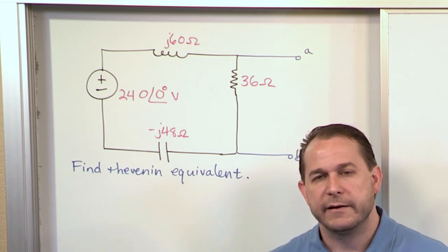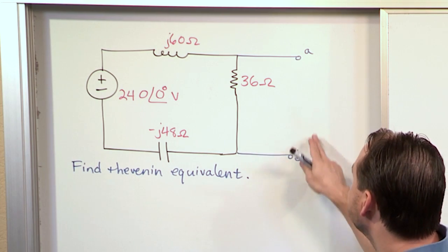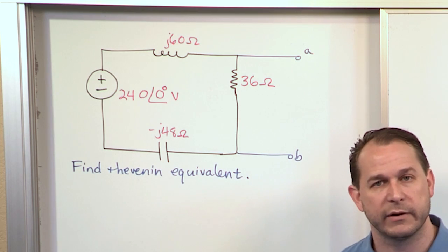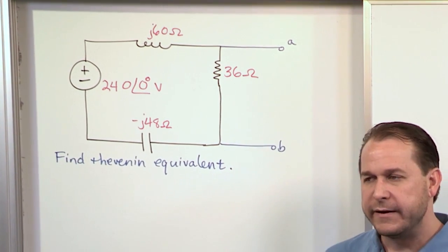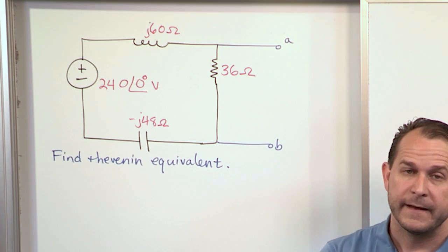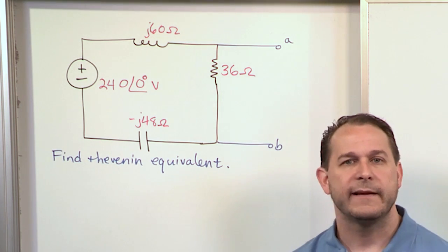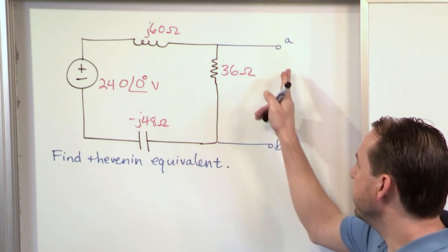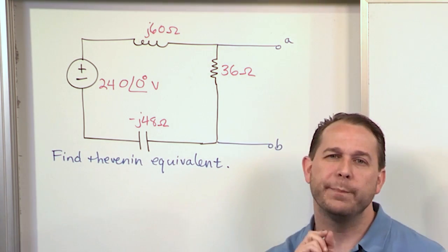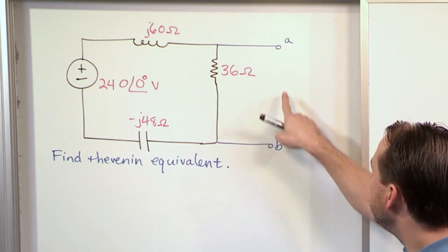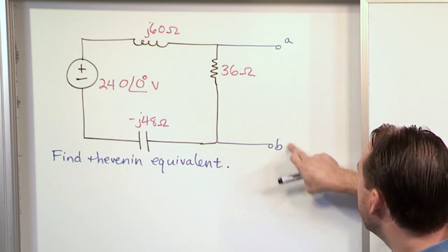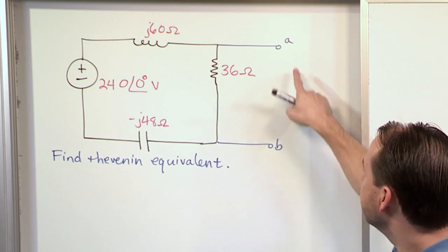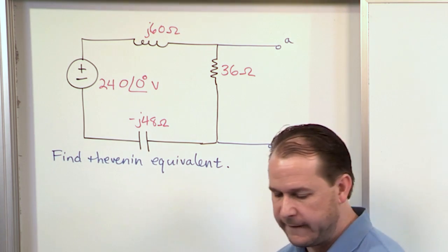Once you have the Thevenin equivalent, what we have between terminals A and B will behave exactly the same as this Thevenin equivalent we're going to calculate. There are two steps: first you find the Thevenin equivalent voltage, then you find the Thevenin equivalent impedance. To find the voltage, you look between terminals A and B and calculate the open circuit voltage. That means there's nothing connected between A and B — it's an open circuit — but we want to find out what this voltage VAB is, which is the Thevenin equivalent voltage.